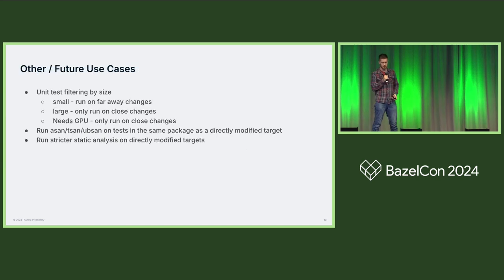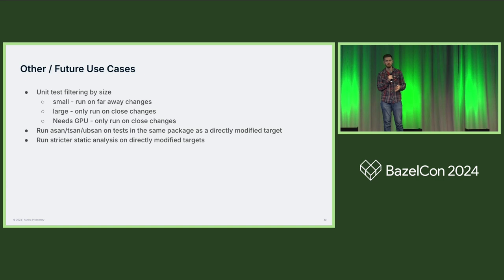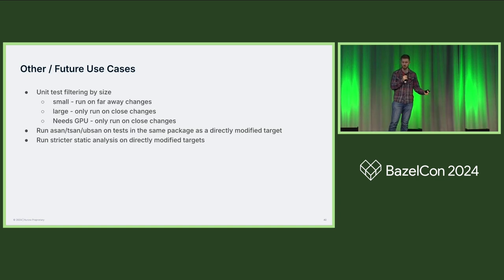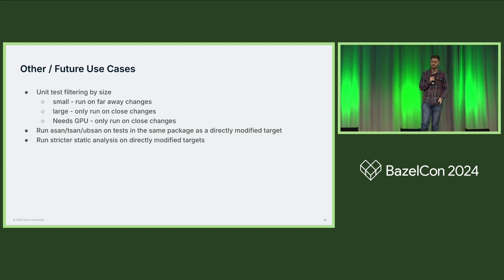For the future, we want to start using this data to filter unit tests. If we have a very large unit test that takes a long time, or a unit test that needs a GPU, we'd only run those on close changes. We're also looking at building and testing targets with various sanitizers but only when they're very close — because if you try to run your whole CI for all different sanitizer types, you spend a lot of money, and sanitizer tests take longer to build and run.